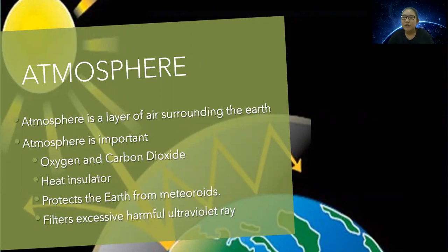It acts as a heat insulator to prevent heat from escaping the earth. It protects the earth from meteorites. Meteors will burn into small fragments before reaching the earth. It will also filter excessive harmful ultraviolet rays from the sun.